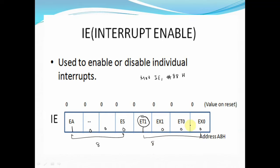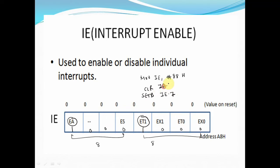Similarly, if you want to enable any other interrupt, make that particular bit equal to 1. Since IE is bit-addressable, you can also use instructions like SETB or CLR to set or clear a particular bit in the IE register. For example, to make EA equal to 1, you can write: SETB IE.7. If you want to clear any particular bit, you can use: CLR IE, 1. These instructions are all valid with the IE register.